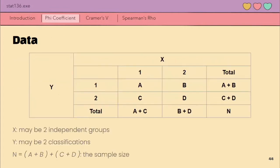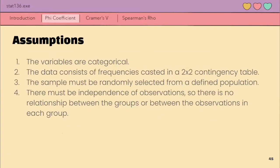So for our data, again, we need to construct a 2 by 2 contingency table like this one. X may be two independent groups and Y may be two classifications. This is what we mean by two binary variables. For its assumptions, again, same lang din with the Cramer, but ang difference nga lang is that the data consists of frequencies which can be cast in a 2 by 2 contingency table.